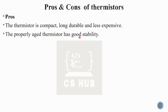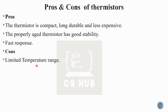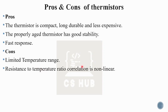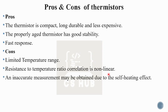Good stability. Response is faster. Disadvantages include: the withstanding temperature range is limited. Non-linear correlation is a drawback. Self-heating can introduce inaccuracies in measurements. The thermistor is also fragile.